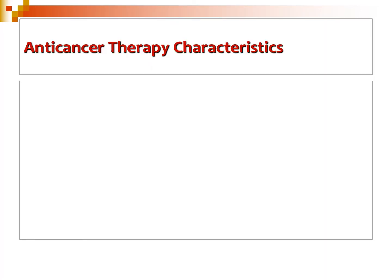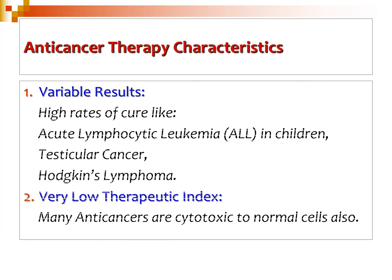Some anti-cancer therapy characteristics: First, results will be variable — not only person to person, but also depending on the type of cancer. For example, high rates of cure are available for conditions like ALL (acute lymphocytic leukemia), childhood cancers, testicular cancer, or Hodgkin lymphomas. In other cancer types, the cure rate may not be as high.